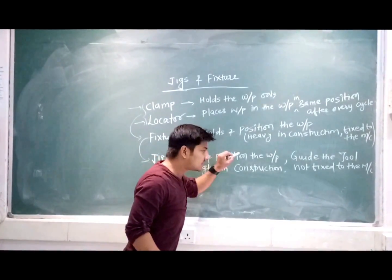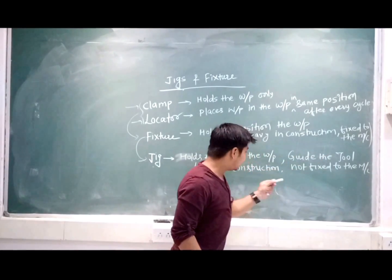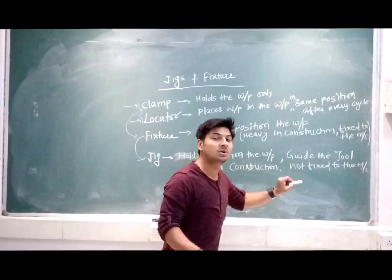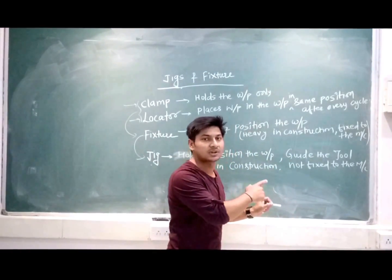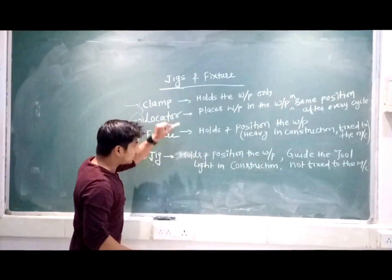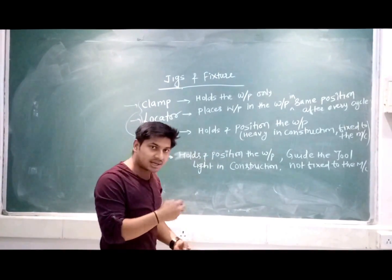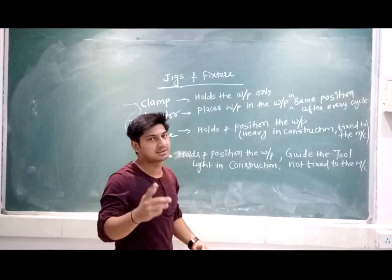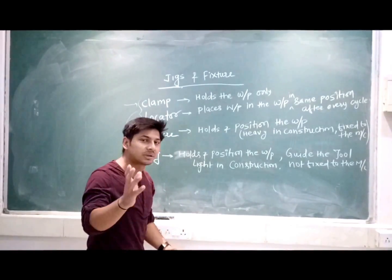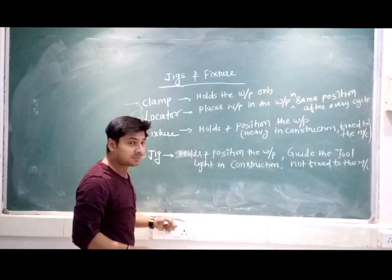A jig holds and positions the workpiece as well as guides the tool. It is lighter in construction and not fixed to the machine. This is an important difference. These four points have been asked four to five times in GATE and previous engineering services examinations.